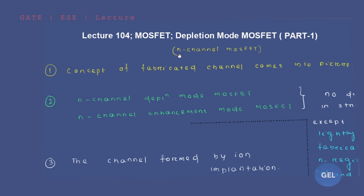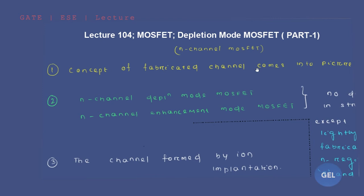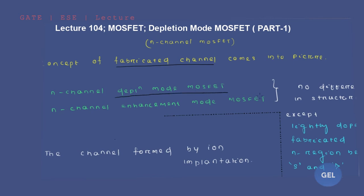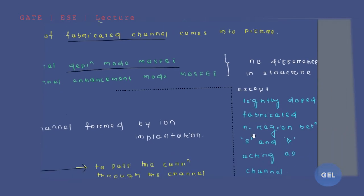All depletion mode MOSFET video lectures will be explained using an n-channel MOSFET. The reason I really love this concept is that depletion mode MOSFET differs from enhancement mode MOSFET in only one way: there is a fabricated channel already present. The first point to discuss is the concept of the fabricated channel. In depletion mode MOSFET there is a lightly doped fabricated n-region which lies between source and drain, and that acts as a channel.